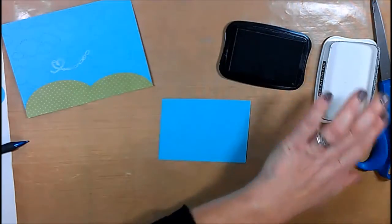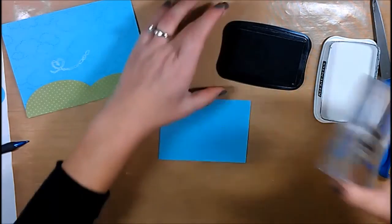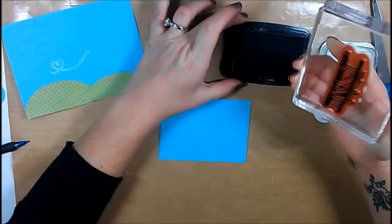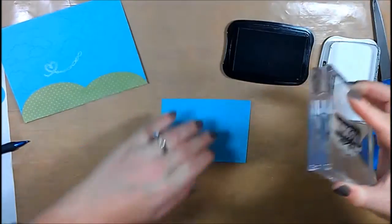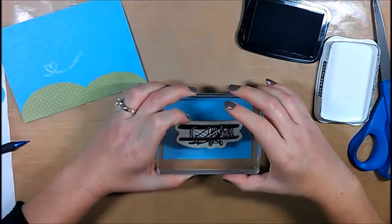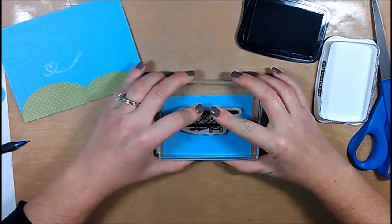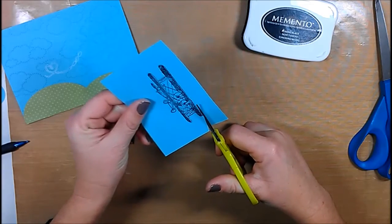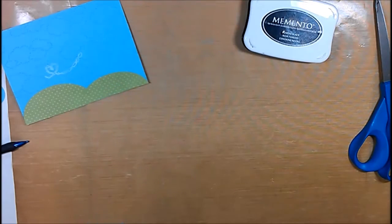I grabbed a scrap piece of Tempting Turquoise paper and I used my Memento Tuxedo Black ink and I stamped the airplane image onto the Tempting Turquoise paper. I used some scissors to fussy cut the plane.